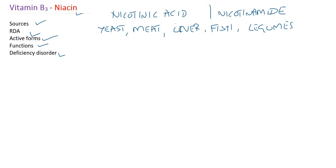An important point to remember about niacin specifically: niacin not only has a dietary source — it can also be synthesized in our body. During the introductory lecture on vitamins, I mentioned that generally vitamins cannot be synthesized by the body, but this is an exception where our body can synthesize niacin from an amino acid called tryptophan.